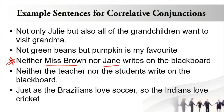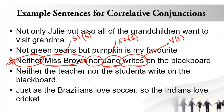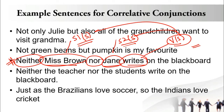The third sentence: 'Neither Miss Brown nor Jane writes on the blackboard.' The correlative conjunction is 'neither/nor.' Miss Brown is subject one (singular), Jane is subject two (singular). The verb 'writes' is singular. Since both subjects are singular, whether you decide the verb based on subject one or subject two, the answer is the same — singular. The agreement is absolutely right.